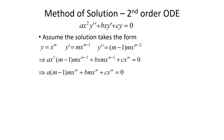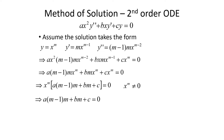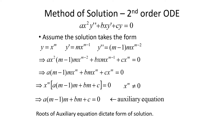We factor out x^m to get x^m times [a·m(m-1) + bm + c] = 0. Since x^m is never zero, the expression in brackets must equal zero: a·m(m-1) + bm + c = 0. This is called the auxiliary equation for a Cauchy-Euler equation.